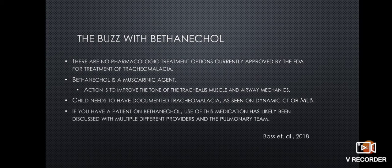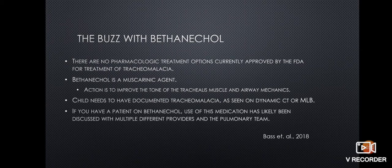Regarding bethanechol — it is relatively new, and notably, there are no pharmacologic treatment options currently approved by the FDA for treatment of tracheomalacia. Bethanechol is a muscarinic agent; its action is to improve the tone of the trachealis muscle and airway mechanics. The child needs to have documented tracheomalacia as seen on a dynamic CT or MLB. If a patient is on bethanechol, use of this medication has likely been discussed with multiple providers on the pulmonary team before being started.